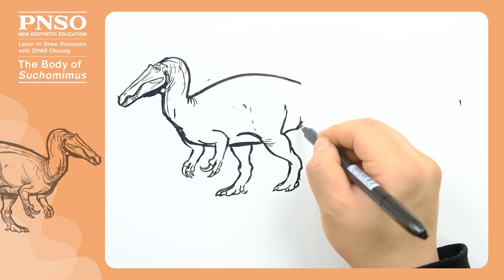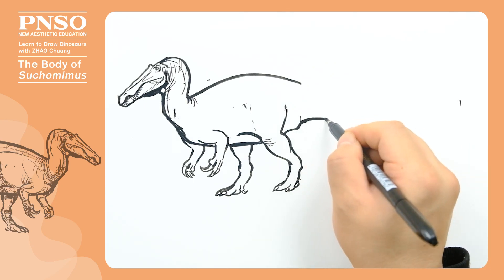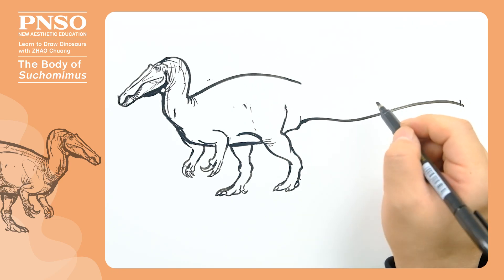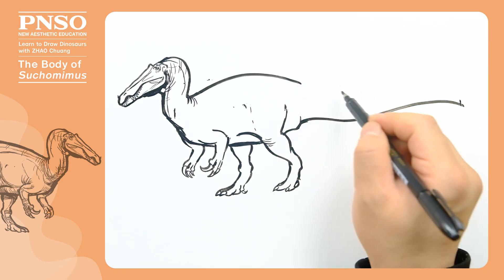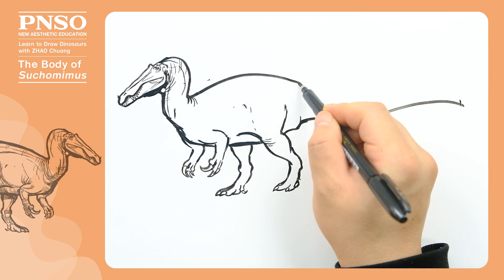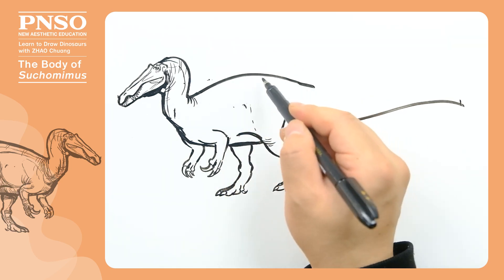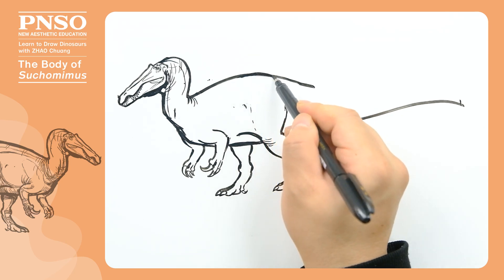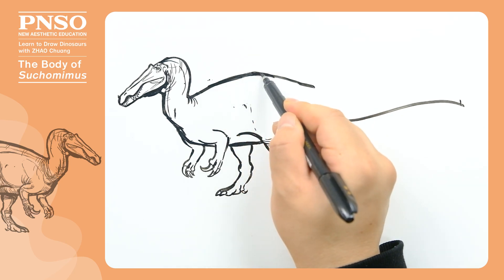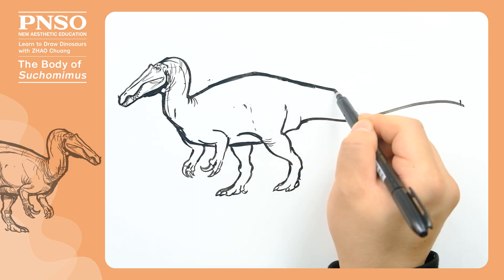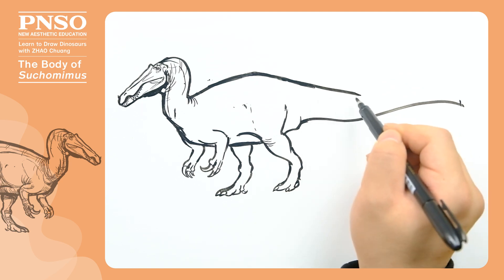Finally, let's draw its long tail. We should note that there was a sail-like structure on the dorsal side of a long section, on the base of its tail, which extended from the back. Its tail was thick at the base and became thinner from the middle.